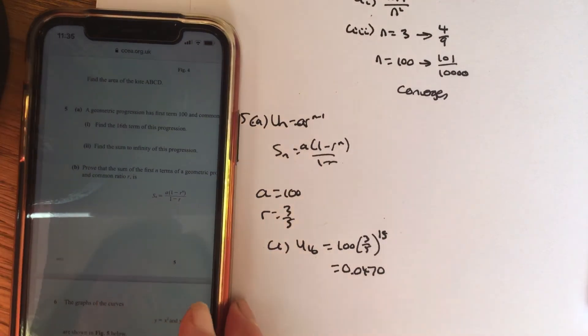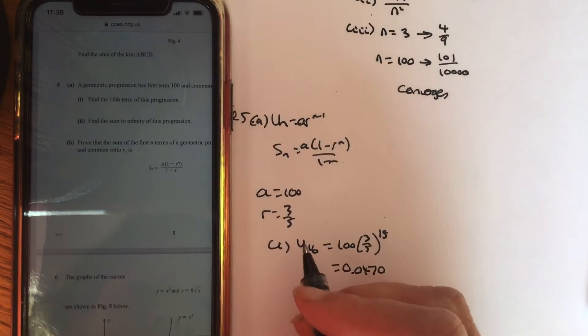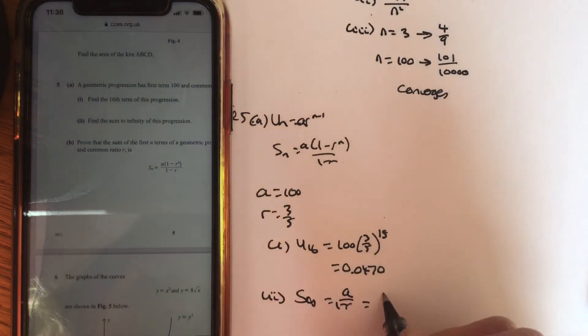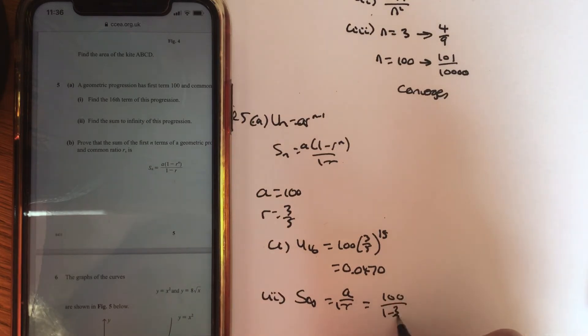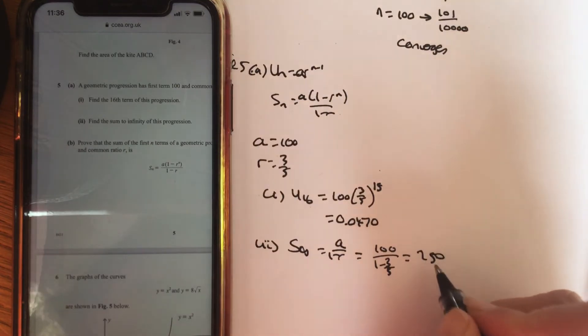The next part of the question is find the sum to infinity. So part 2, again, that's just using your formula. Sum to infinity is a over (1-r). So a over (1 minus 3 fifths). And if you work that out, you should get an answer of 250.